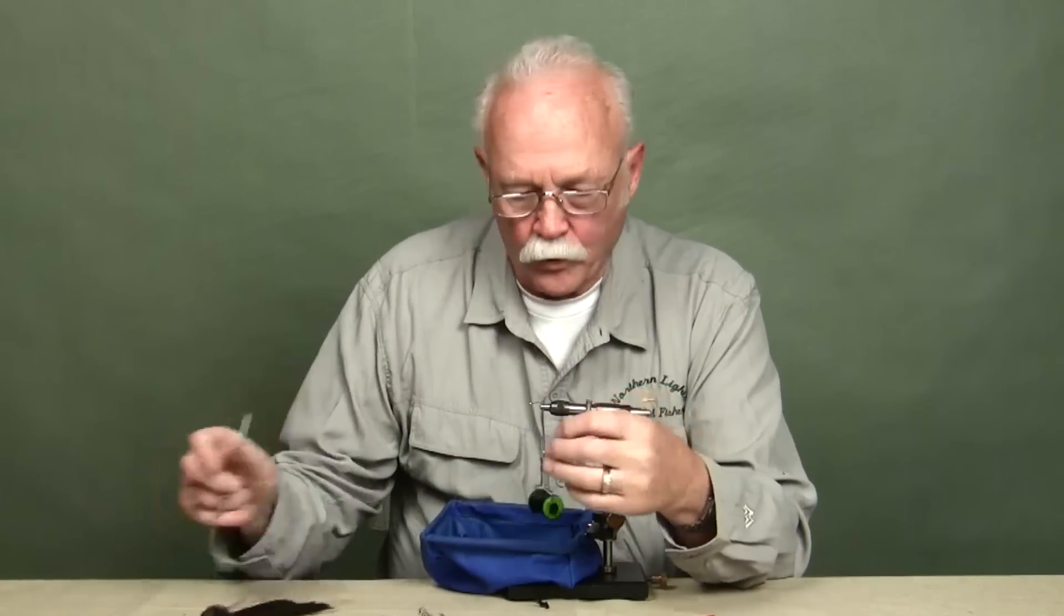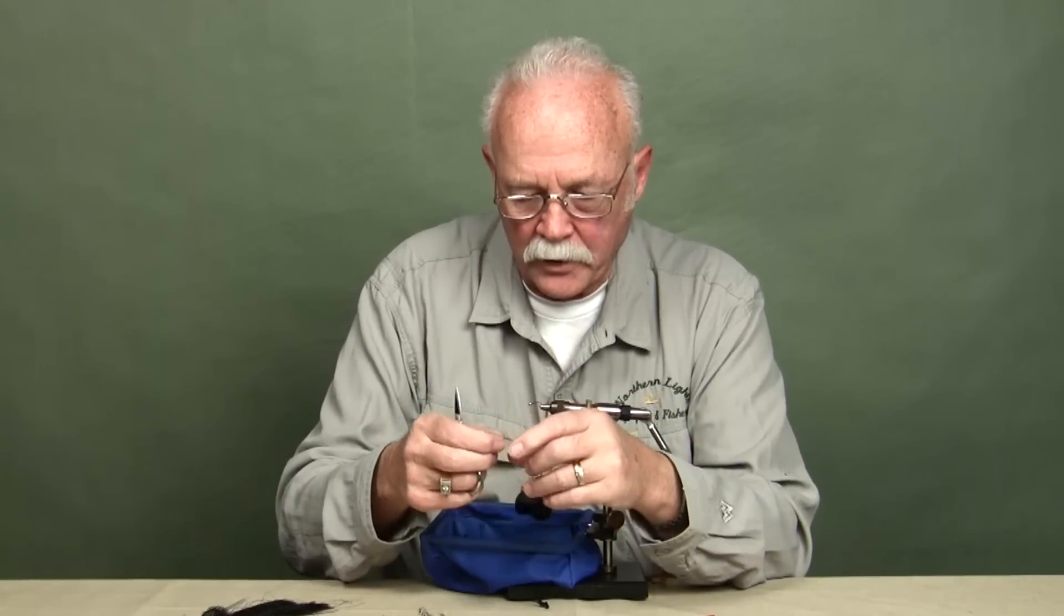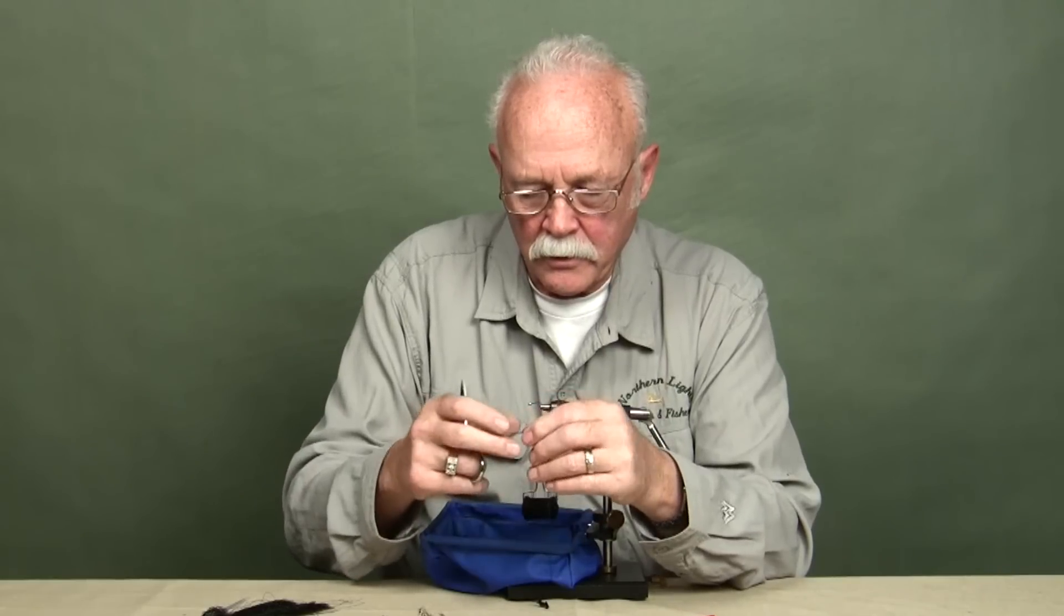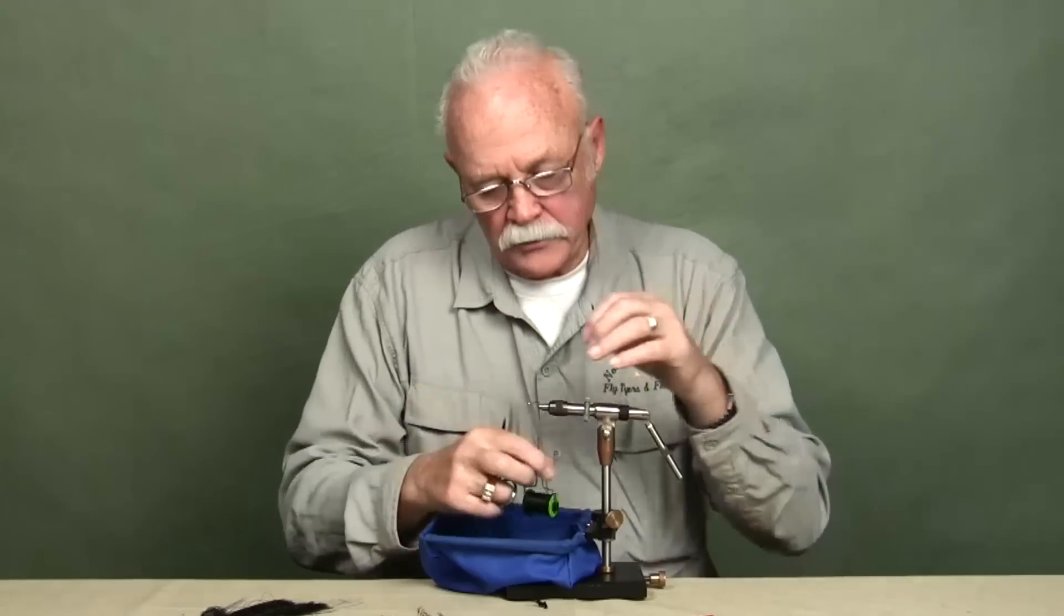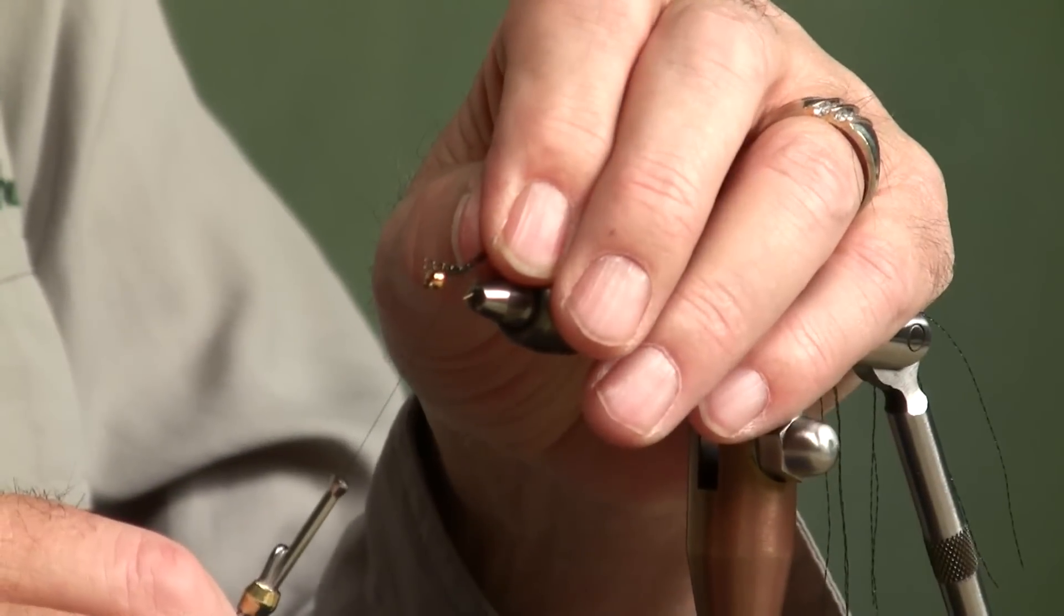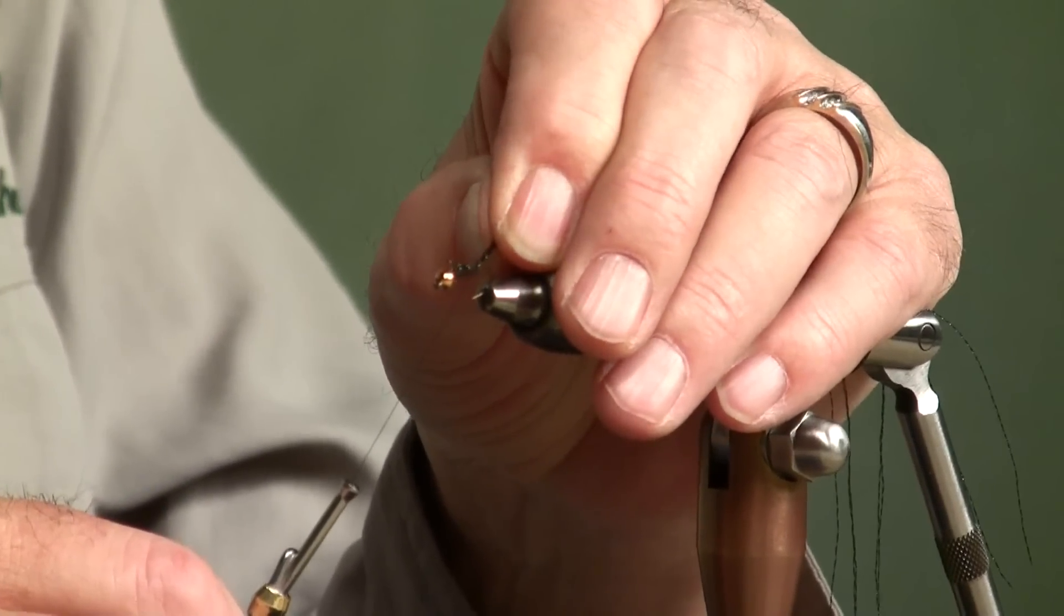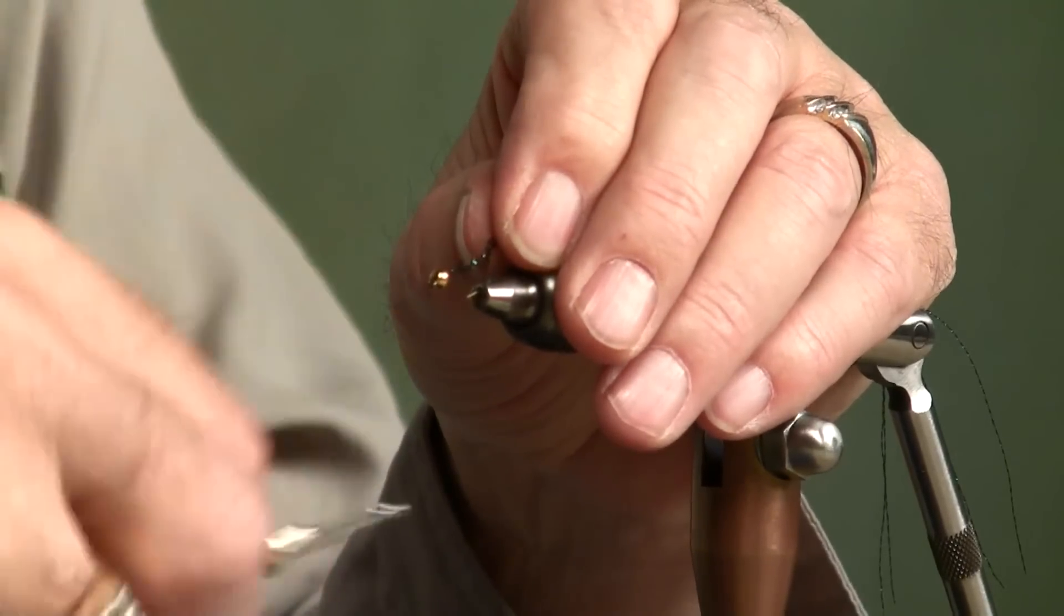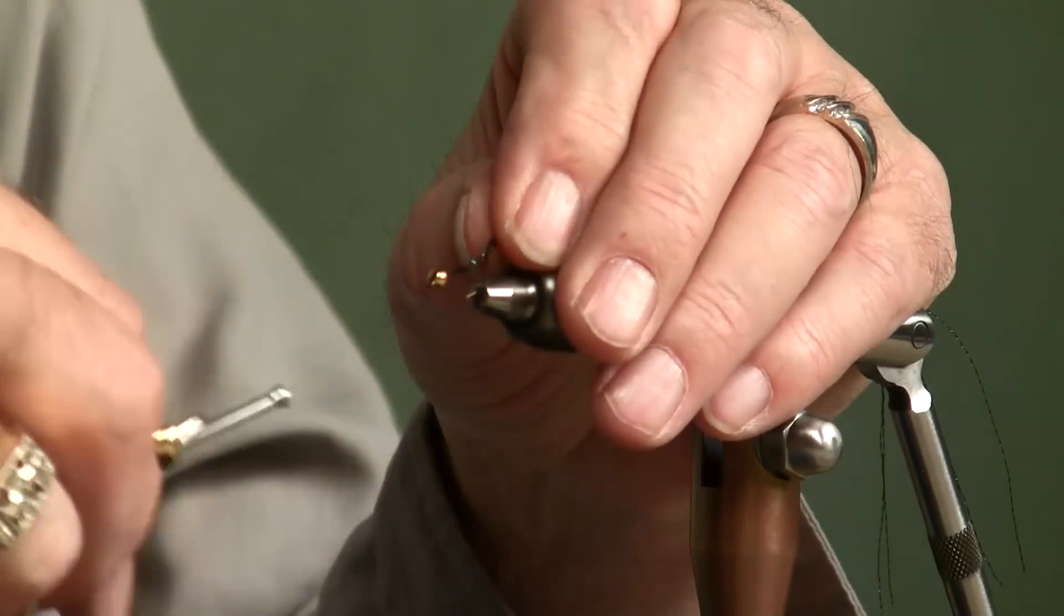Remember, the more you clip off, the thicker the body will be. And I got one little tiny short one. And tie those in. I don't care how long they are because I'm going to pull them through so I don't have to reach up there and clip them off. Just save yourself a step by doing that.